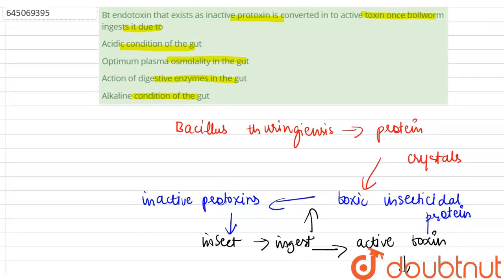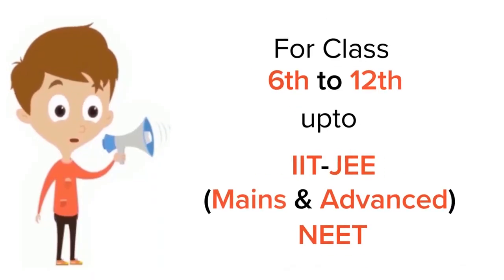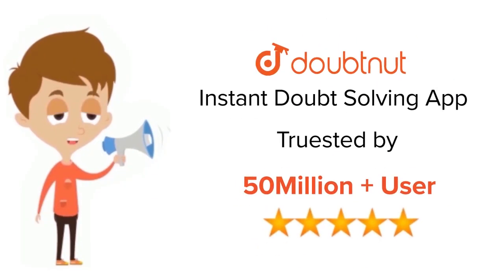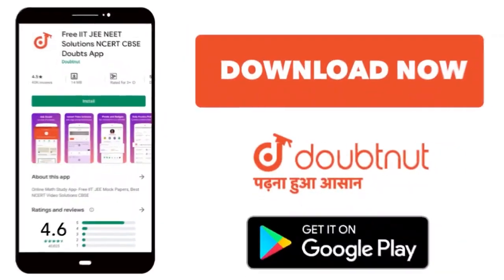So the correct option here is alkaline condition of the gut. The other options are incorrect because it is not due to the acidic condition of the gut, not due to the optimum plasma osmolality in the gut, not due to the action of digestive enzymes. It is due to the alkaline pH of the gut. So the correct option here is alkaline condition of the gut. Thank you. For class 6-12, IIT, JEE, and NEET level, trusted by more than 5 crore students, download Doubtnut app today.